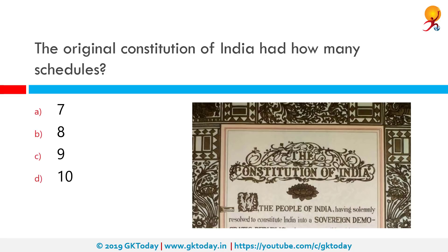The original constitution of India had how many schedules? The correct answer is eight. Schedules are lists in the Constitution of India that categorize and tabulate bureaucratic activities and policy of the government. The Indian Constitution had originally eight schedules. The ninth was added via the First Amendment Act, while the tenth schedule was first added by the 35th Amendment Act.